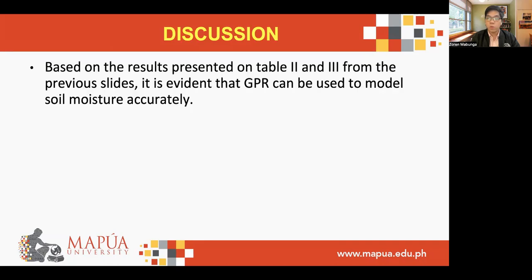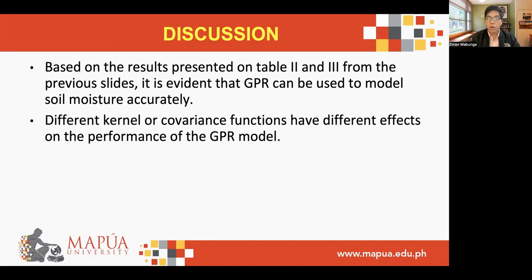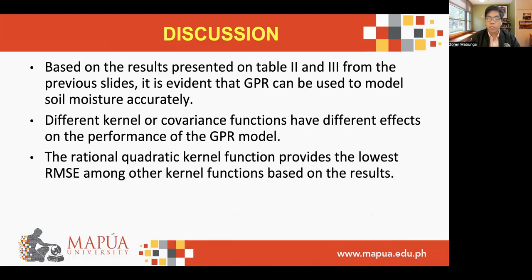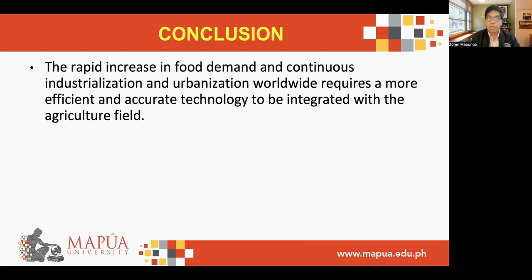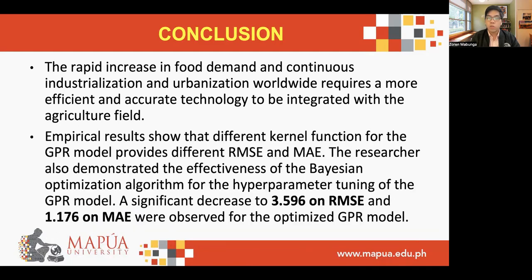Based on the results presented in Tables 2 and 3, it is evident that the GPR model can be used to model soil moisture accurately. Different kernel or covariance functions have different effects on the performance of the GPR model, and the rational quadratic kernel function provides the lowest RMSE among other kernel functions. Using the Bayesian optimization algorithm, a decrease in RMSE and MAE was observed as tabulated in Table 3. Empirical results also demonstrate the effectiveness of the variational optimization algorithm for the hyperparameter tuning of the GPR model, with a significant decrease to 3.596 on RMSE and 1.176 on MAE for the optimized GPR model.